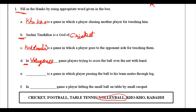E1: blank is a game in which a player passes the ball to teammates through the leg — very easy, it is football. We all must have played football. Then F1: in blank game, a player hits a small ball on a table with a small racket.